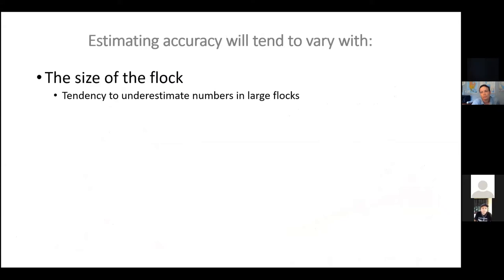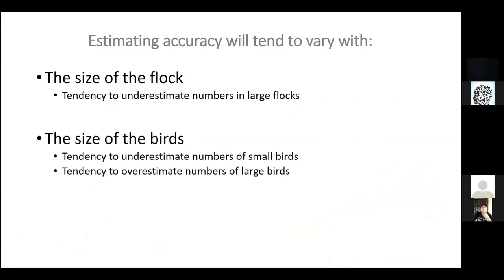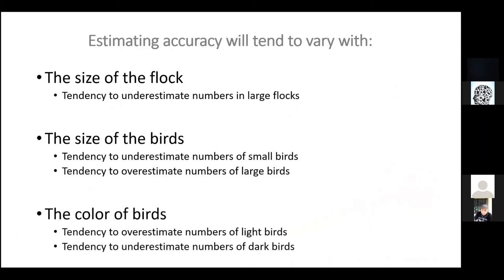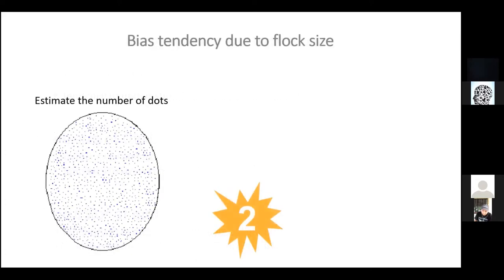Some ways that estimating accuracy varies: with the size of the flock, there's a tendency to underestimate when birds are present in very large groups. With the size of the birds, there's a tendency to underestimate the number of very small birds and to overestimate the number of large birds. And with the color of birds, there is a tendency to overestimate numbers of light birds — they tend to pop out in the landscape.